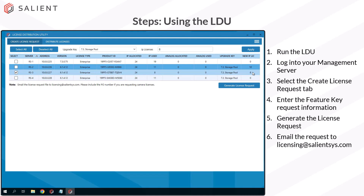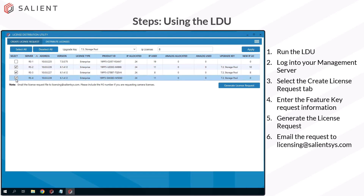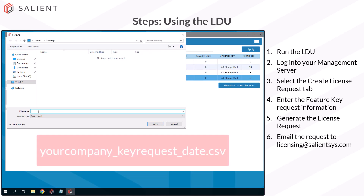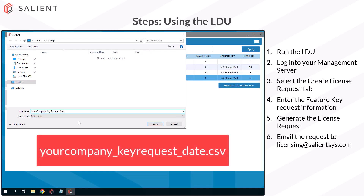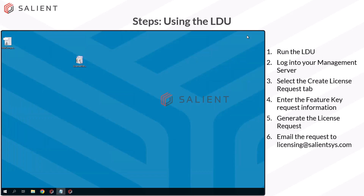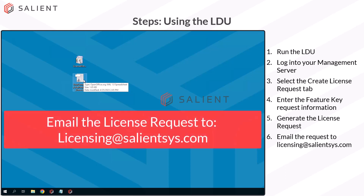Once I've got all of my upgrade keys and new IP license requests set, I need to select the servers that I want to generate a request for — servers two, three, and four. I select the generate license request button, and it's going to ask me where I want to save this. We usually recommend naming the file with your company name, key request, and the date — that just helps us track it. Save that file to your desktop, then minimize the LDU. This license request file needs to be emailed to licensing@salient-sys.com. Once they get it, they'll fill it out with the proper feature keys and send it back to you.